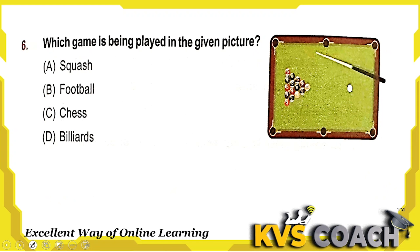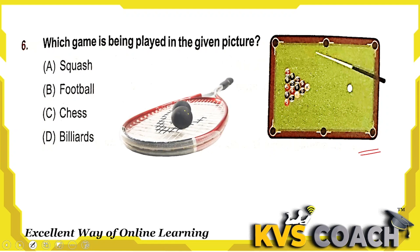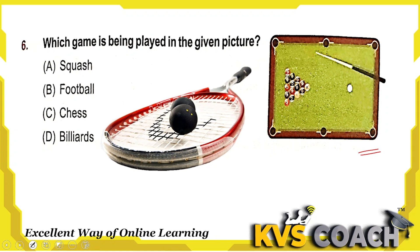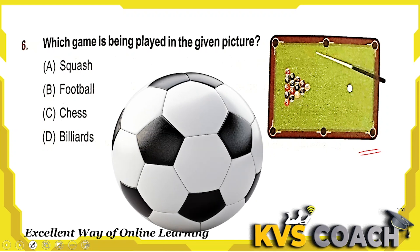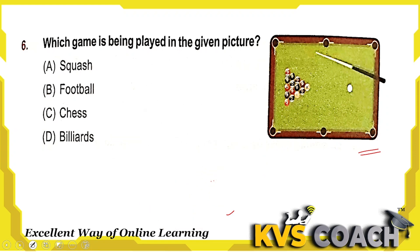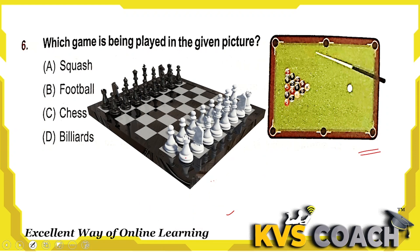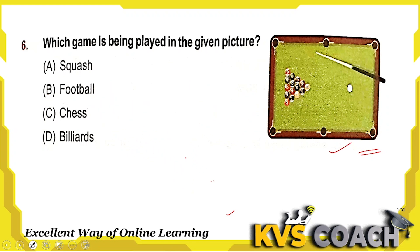Next: which game is being played in the given picture? Option A is squash — for squash we use this type of racket and ball. Option B is football — for football we use this type of ball. Option C is chess — this is a chess board. The picture belongs to option D, billiards. Option D is the right answer here.